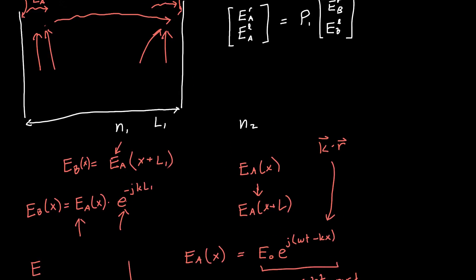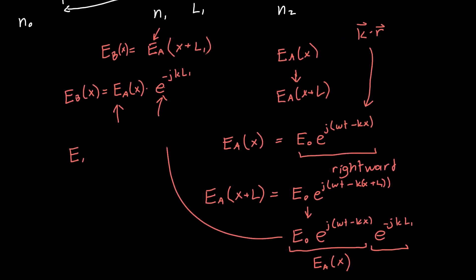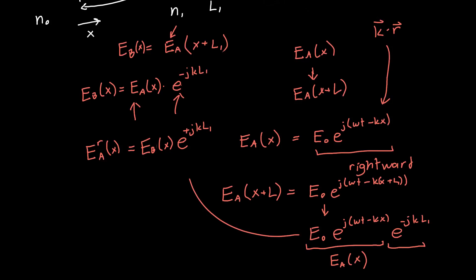But remember, we said that we're interested in figuring out EA as a function of EB. So we're going to rewrite this as EA of X is equal to EB of X times E to the plus J K L1. If we add back in the subscripts, we said these were rightward traveling waves. That gives us exactly what we wanted, a relationship between EA and EB. This will allow us to construct our matrix.